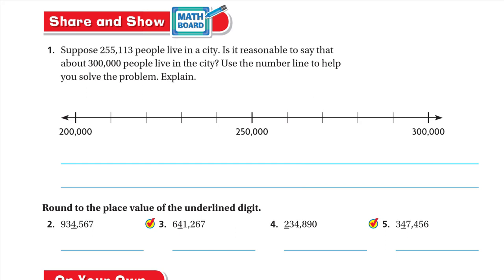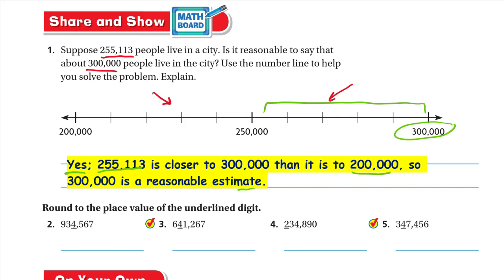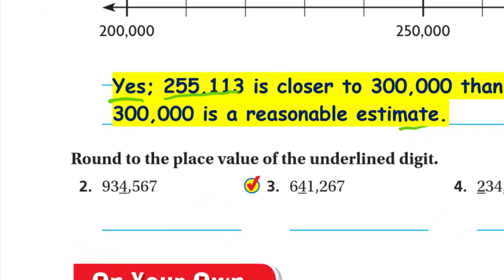Share and show: suppose 255,113 people live in a city. Is it reasonable to say about 300,000 people live in the city? Use the number line to help. On the number line, 255,113 falls after 250,000 — the halfway point. Since it's more than the halfway point, we round to the greater number, 300,000. Yes, 255,113 is closer to 300,000 than to 200,000, so 300,000 is a reasonable estimate.